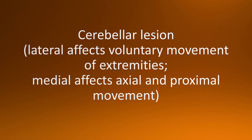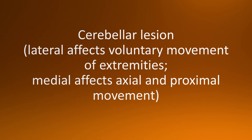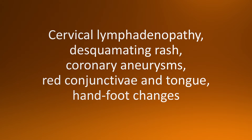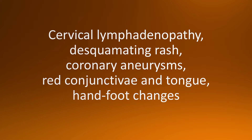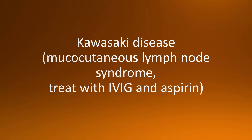Moving on to our next flashcard: cervical lymphadenopathy, fever, vomiting, rash, coronary aneurysms, red conjunctiva and tongue, and hand and foot changes — the answer is Kawasaki disease. It is also known as mucocutaneous lymph node syndrome, and is treated with intravenous immunoglobulins and high-dose aspirin.